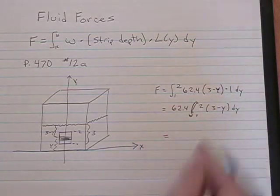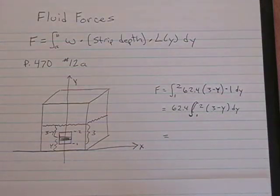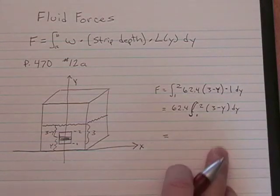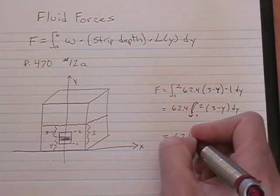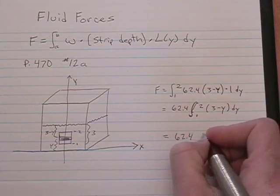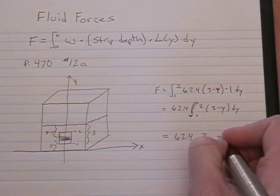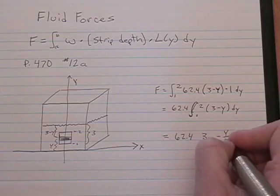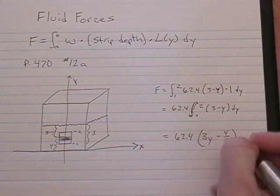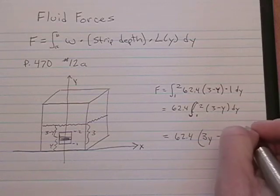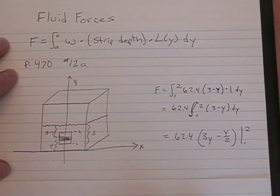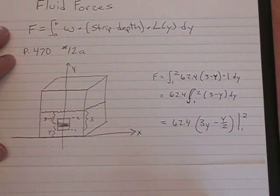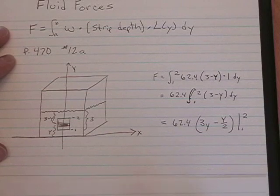Now from here we have a pretty straightforward antiderivative. The antiderivative of three minus Y is just three Y minus Y squared over two. We're going to evaluate it per the fundamental theorem of calculus, part two. From one to two. Big F of B minus big F of A.